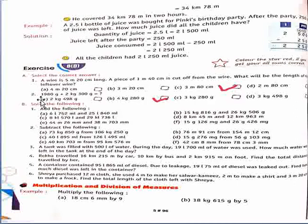Second question: 1,980 gram plus 2 kg 300 gram. So firstly arrange karenge column form mein in your notebook and then plus karenge. So our answer is 4 kg 280 gram.